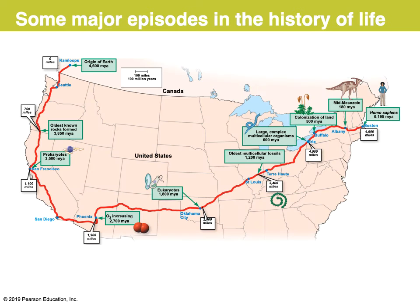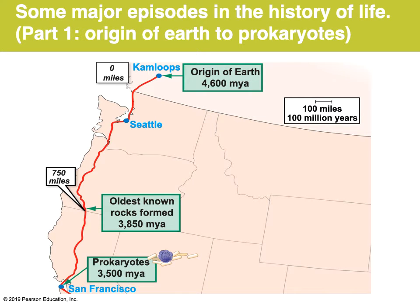Prokaryotes are still in great abundance today. Here's that overview of the history of life mapped onto the United States. If you start on the way left side — slipping over the corner into Canada — you see a little sign that says zero miles. You're going to be traveling from west to east. As you go along this little red line, it shows you the various major events in the evolution of life. The MYA stands for million years ago, which is the same as 4.6 billion years ago. About 100 miles equals about 100 million years.